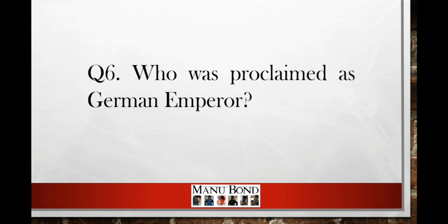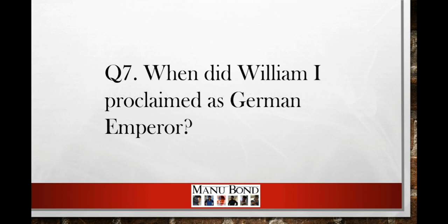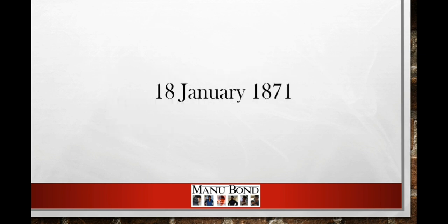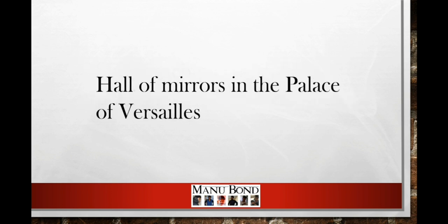Question number 6: Who was proclaimed as German Emperor? Answer: Prussian king Kaiser William I. Question number 7: When was William I proclaimed as German Emperor? Answer: 18th January 1871. Question number 8: In which place was William I proclaimed as German Emperor? Answer: Hall of Mirrors in the Palace of Versailles.